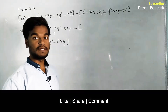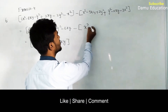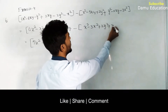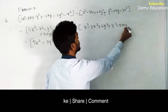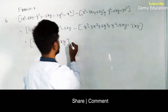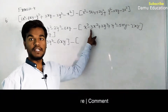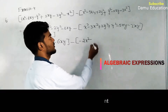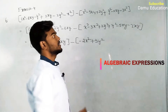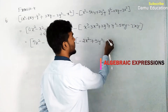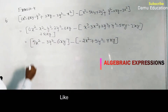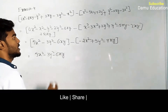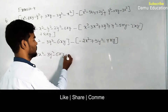Now we write the like terms of the second sum in the same place: x² minus 3x², plus 2y² plus y², minus 5xy minus 2xy. Combining: x² minus 3x² becomes minus 2x², and minus 5xy minus 2xy becomes minus 7xy.